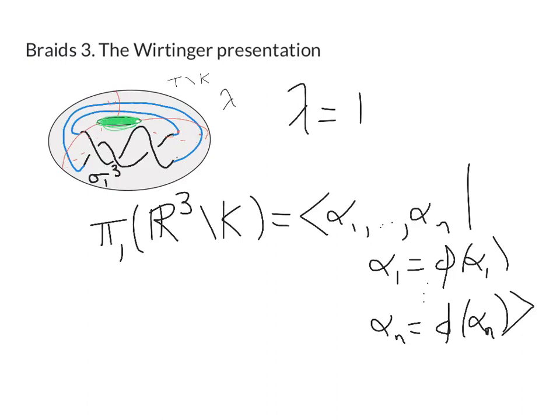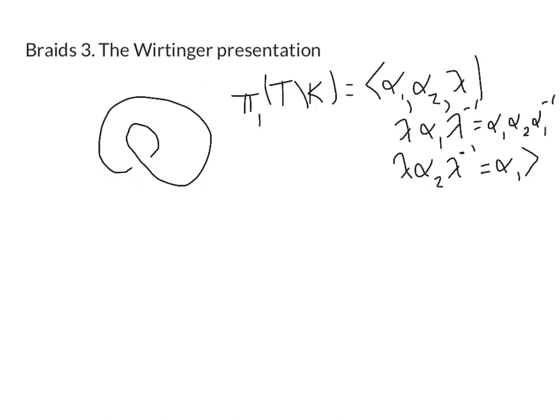So here's the knot from the previous slide. We just took this braid σ₁ and closed it off to get what you can now see is an unknot. And the fundamental group of T minus K was given this presentation α₁ α₂ λ with these two relations.